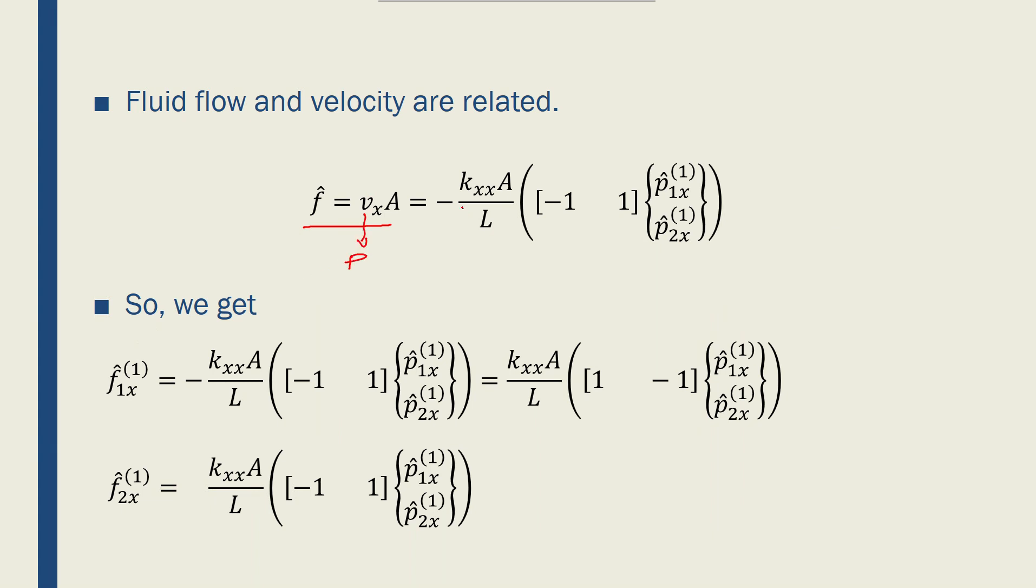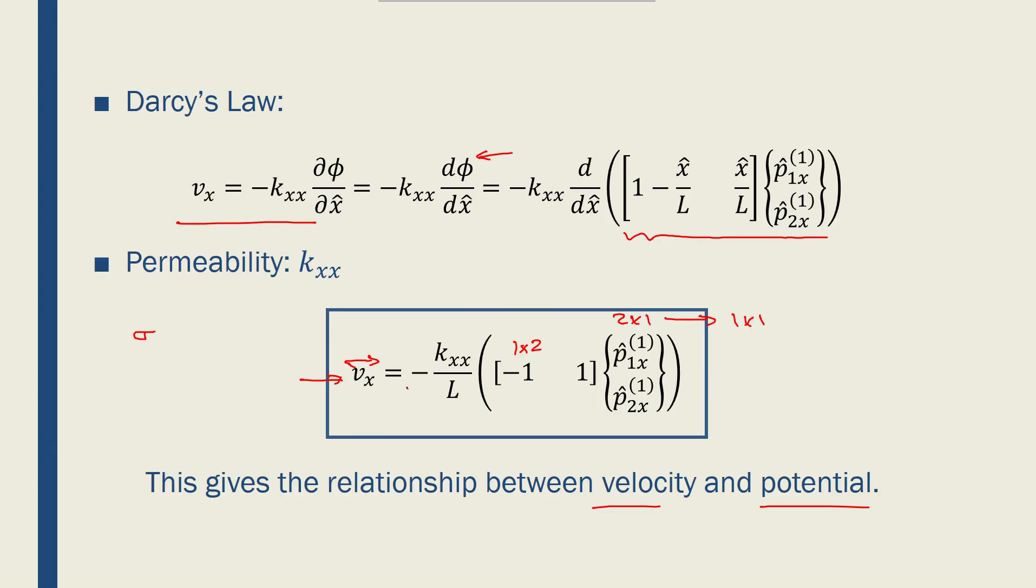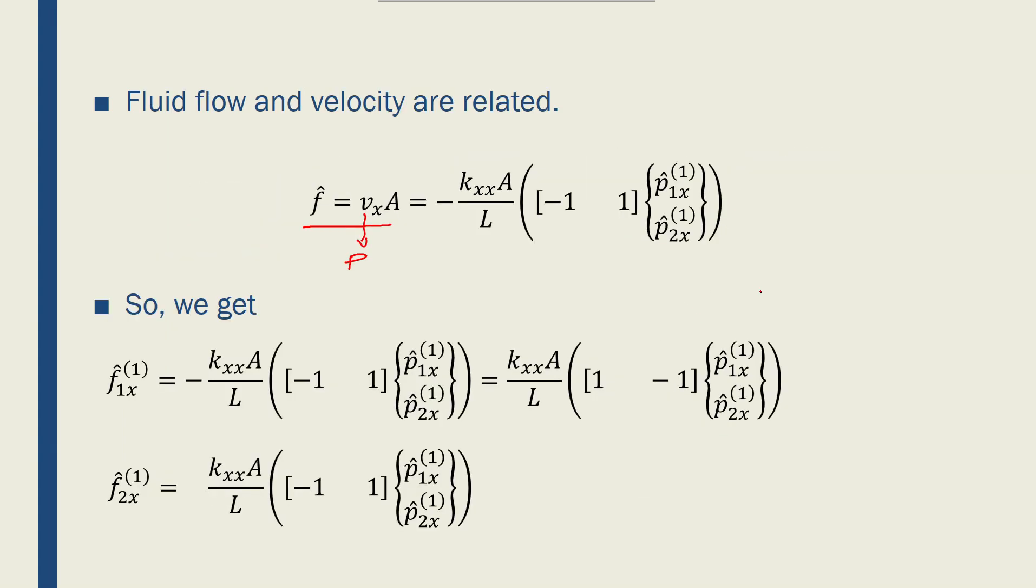As a result, we can say f is equal to minus kxx A over L, which we found here, times this 1 by 2 row matrix, times 2 by 1 vector. So the only difference is that we have to add an A there. So we found the relationship between the fluid flow rate and the potentials.